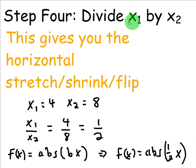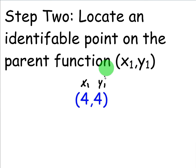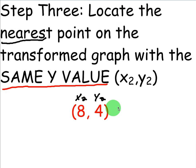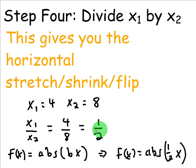Step 4 is to divide x1 by x2. This gives you the horizontal stretch, slash shrink, slash flip. So, take your initial x value, divide by your new x value, and this is important, right? Whenever we're talking about horizontal stretch, shrink, and flip, you always do x1 over x2. So, take x1, your x1 value, which is 4, and then take your x2 value, which is 8, and you divide them, and you get 1 half.